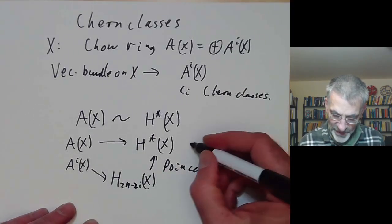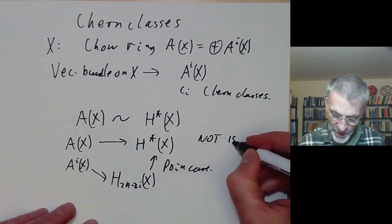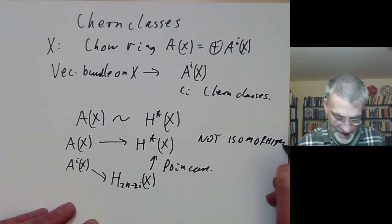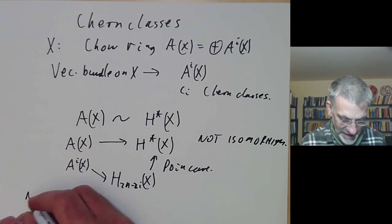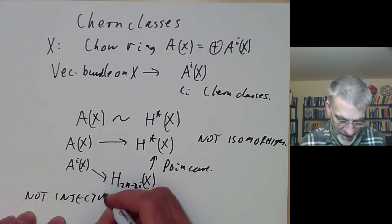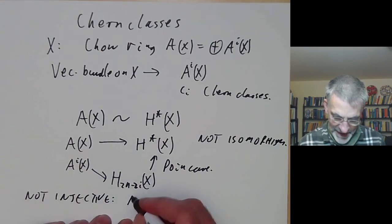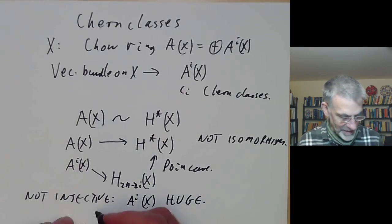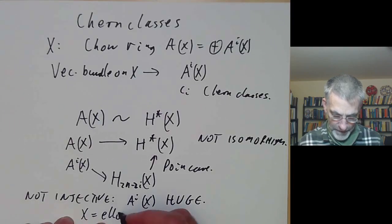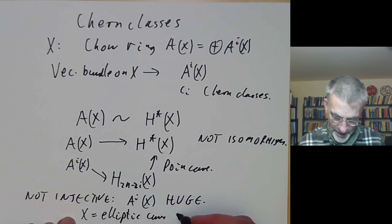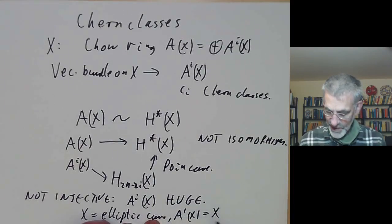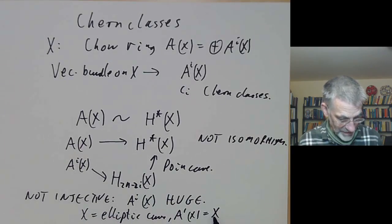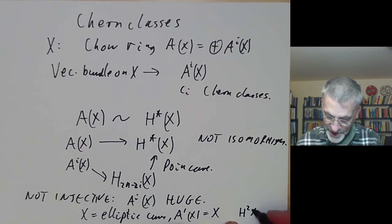One obvious question is: is this map an isomorphism? The answer is no — it fails quite badly in general. It's not injective in general. The reason is that A^i of X is huge in general. For example, if we take X to be an elliptic curve, then A^1 of X is just X, which could be uncountable if you're working with the complex numbers. However, the second cohomology group of X with integer coefficients is just Z.